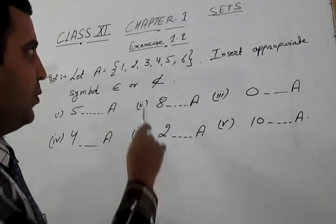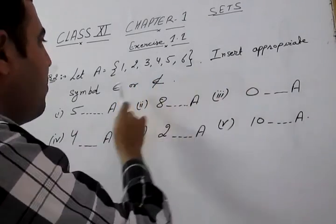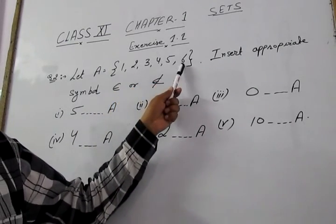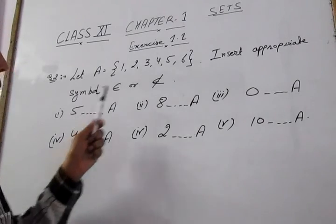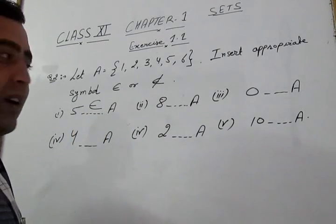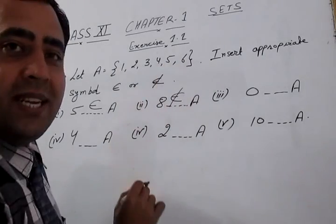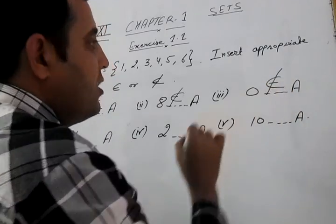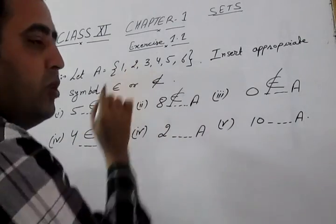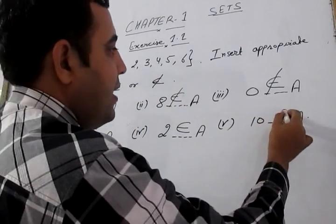Question 2: Let A be the set with elements {1, 2, 3, 4, 5, 6}. We have to insert the appropriate symbol ∈ or ∉. Five belongs to A since it is present in the set. Eight does not belong to A as it is not present. Zero does not belong to A. Four belongs to A. Two belongs to A. Ten does not belong to A.